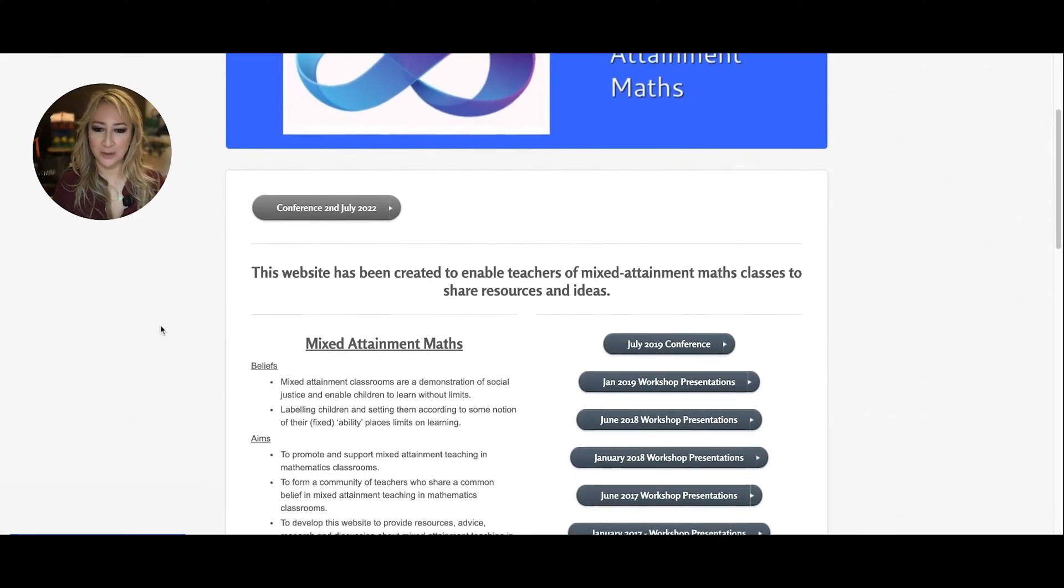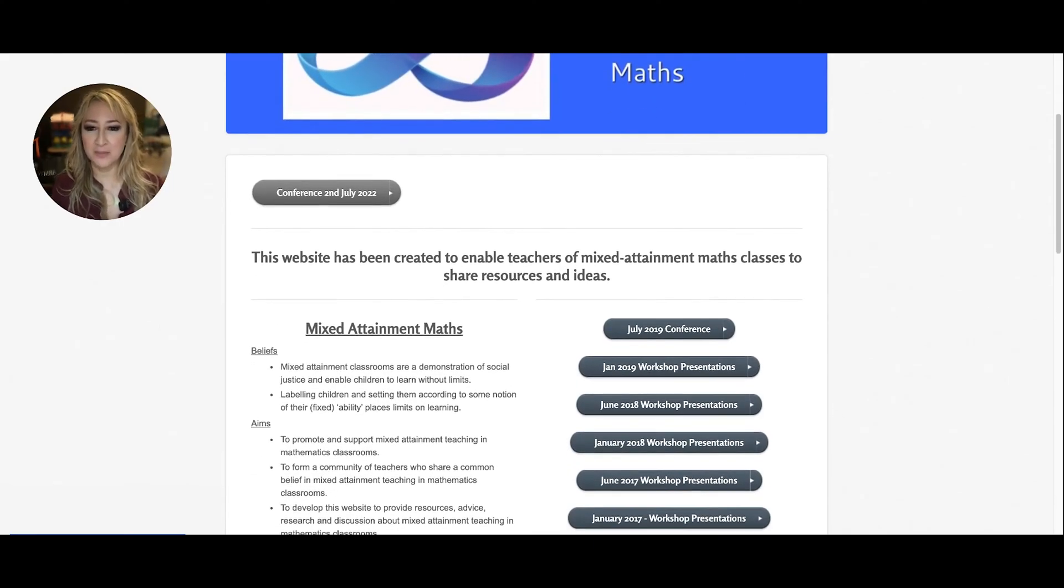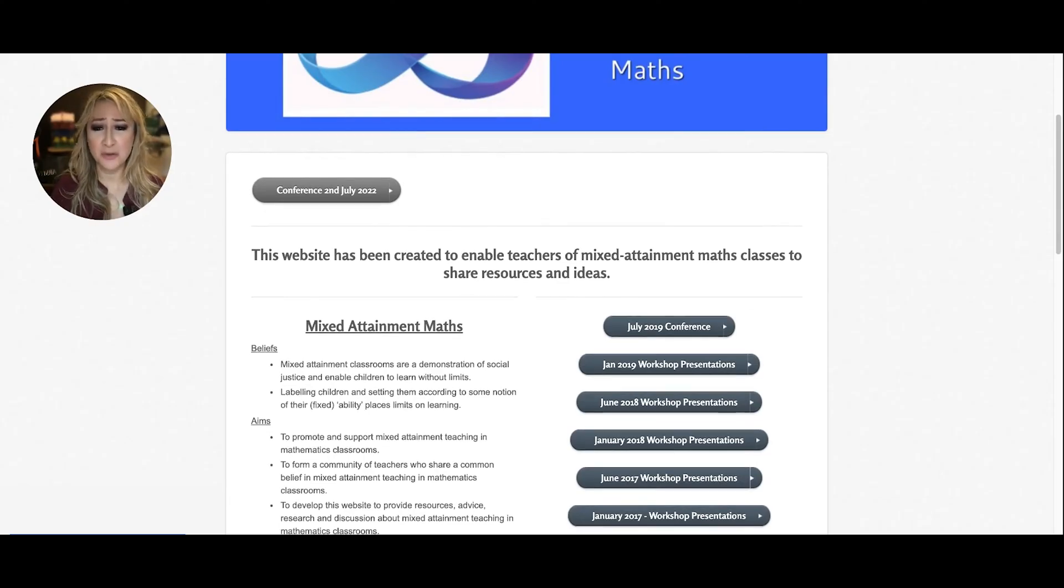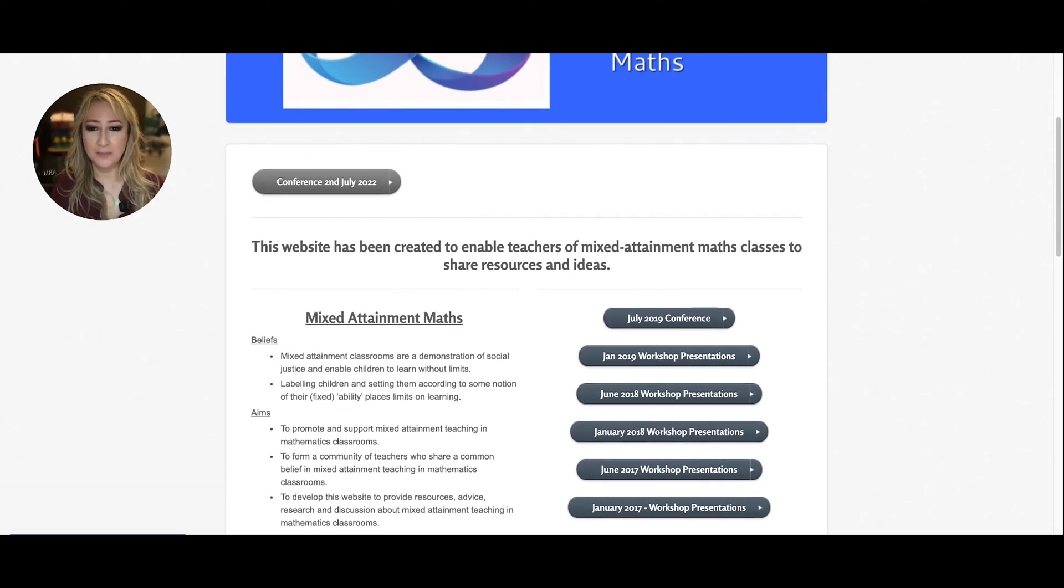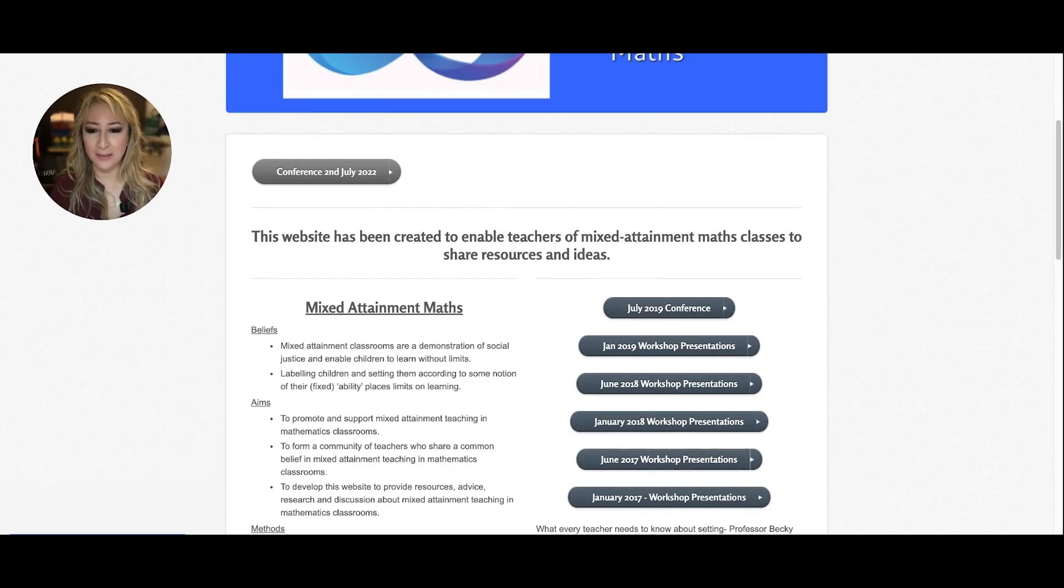So I love her beliefs and her aims here. Beliefs: mixed attainment classrooms are a demonstration of social justice and enable children to learn without limits. And another belief is about labeling children and setting them according to some notion of fixed ability places limits on learning. So mixed attainment is really about being very inclusive and putting students of varying backgrounds, confidence levels in the same classroom and not labeling them in different streams, tracks or sets.